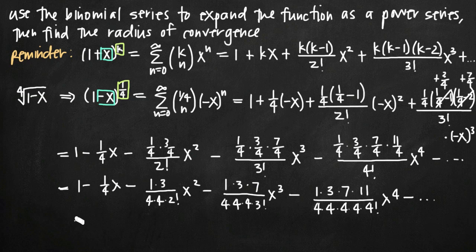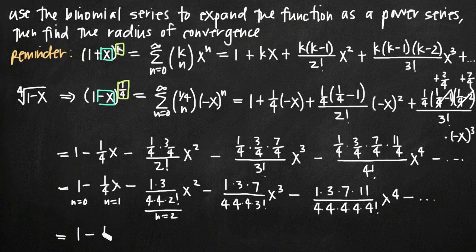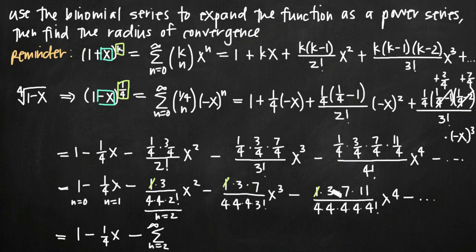It's time to write our power series representation. We're looking for a representation of the a sub n term. The pattern is easiest to pick out starting with the n equals 2 term. Remember that we got this term from plugging in n equals 0, this one was n equals 1, and this one was n equals 2. So we want to start our power series representation with n equals 2 because that's where the pattern is easy to see. We're going to say this equals 1 minus 1/4 x, pulling those two terms out in front, minus the sum from n equals 2 to infinity.